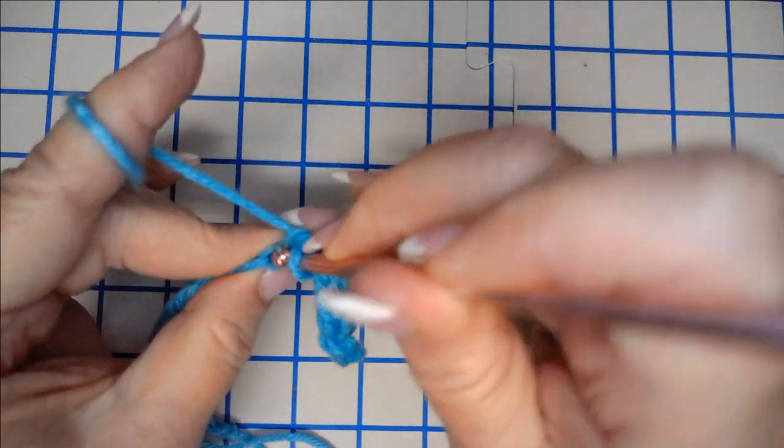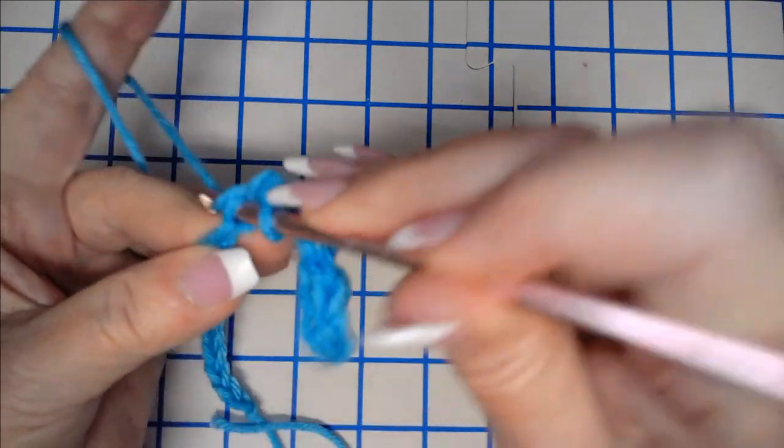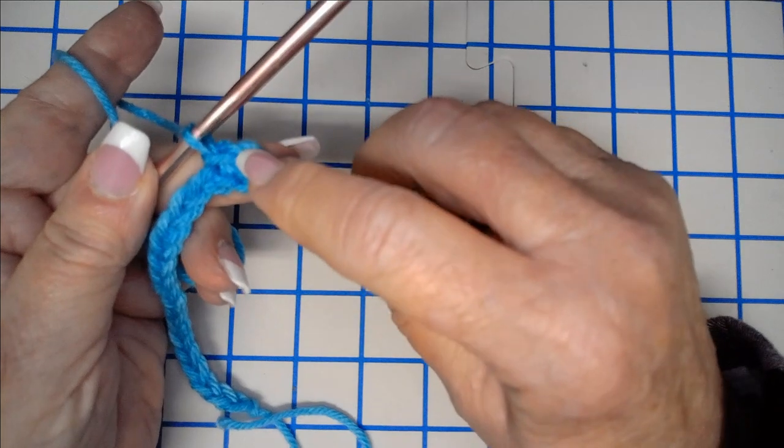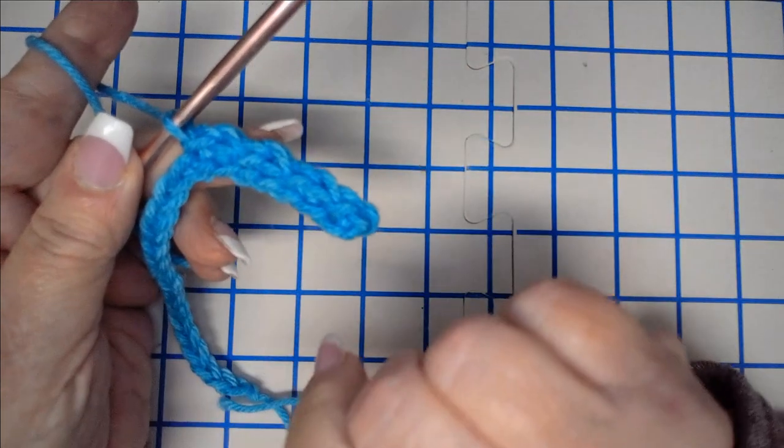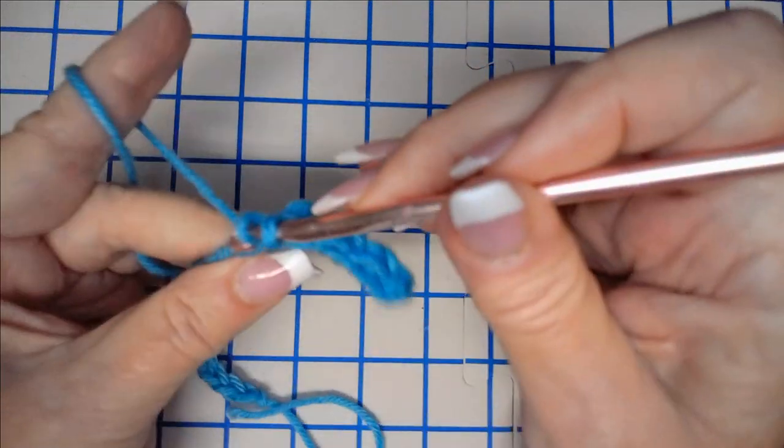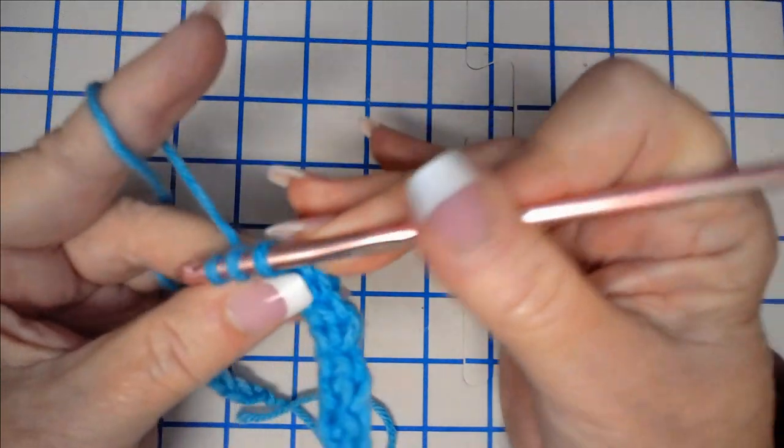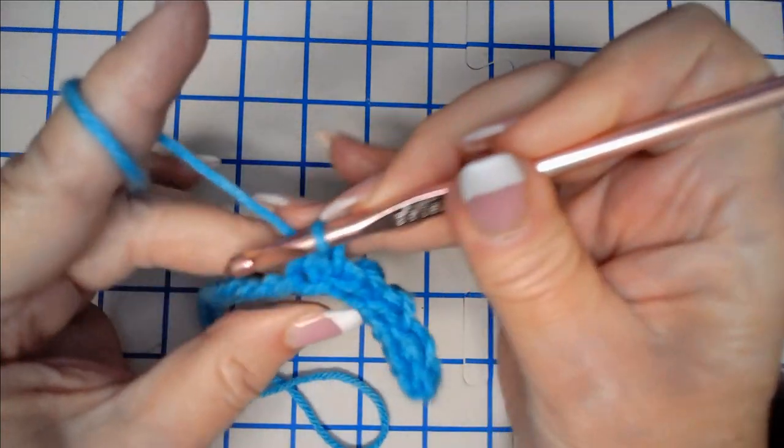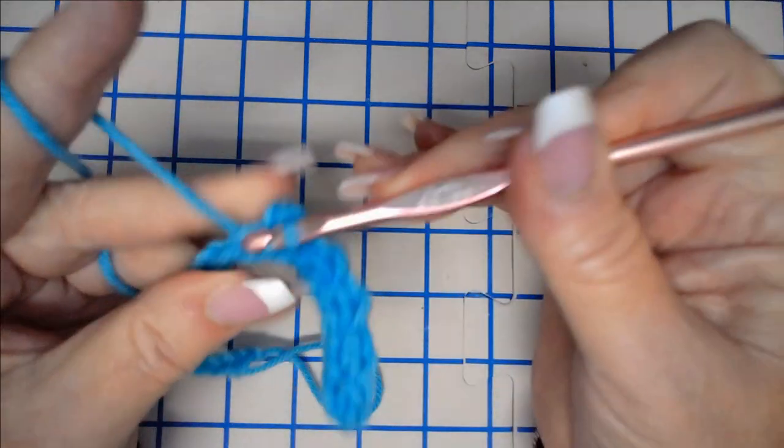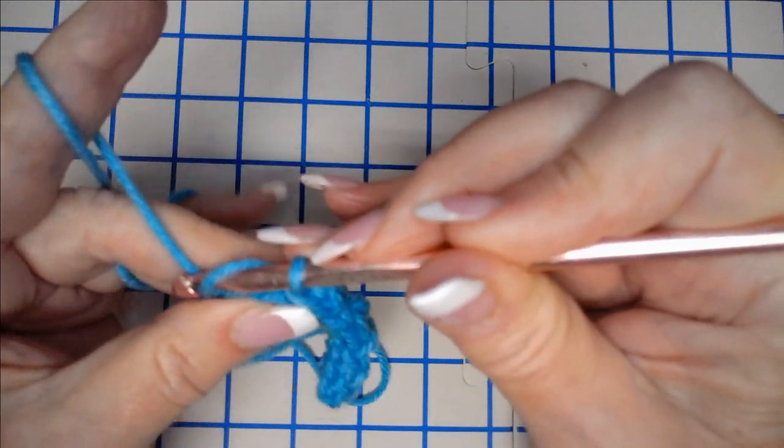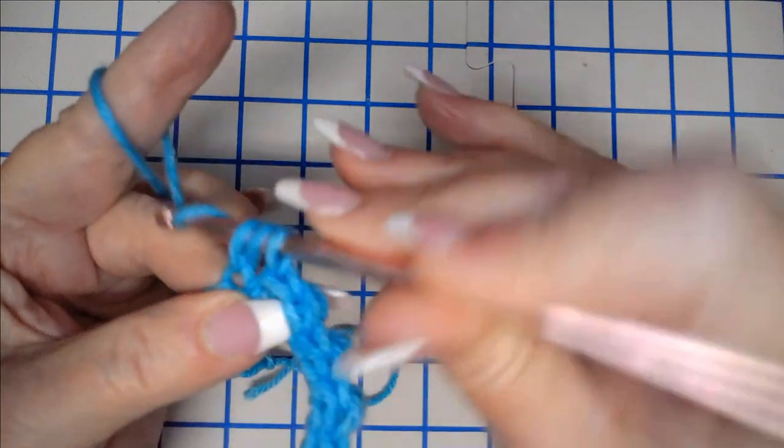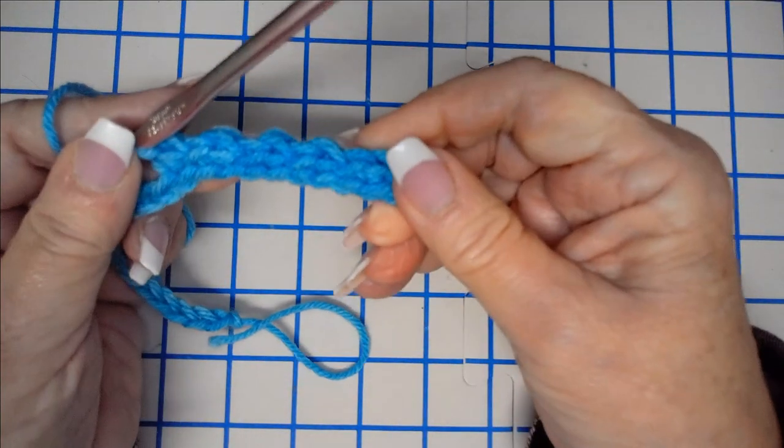Slip stitch. Now folks, when you make these slip stitches here, don't pull down tight on this slip stitch, because if you do, you're going to have trouble working into it when we come back around. All right, so slip stitch, and now half double crochet. Slip stitch, and half double crochet. And I will meet you at the end of the row.